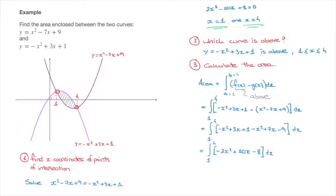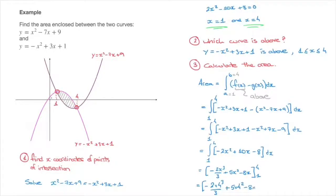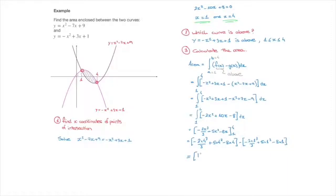Integrating using the power rule, we find the antiderivative: negative 2x cubed over 3 plus 5x squared minus 8x, evaluated from 1 to 4. Plugging in the upper and lower limits, this equals (negative 2 times 4 cubed over 3 plus 5 times 4 squared minus 8 times 4) minus (negative 2 times 1 cubed over 3 plus 5 times 1 squared minus 8 times 1), which gives 16 over 3 minus negative 11 over 3, equals 16 over 3 plus 11 over 3, equals 27 over 3, equals 9. That's 9 units of area.